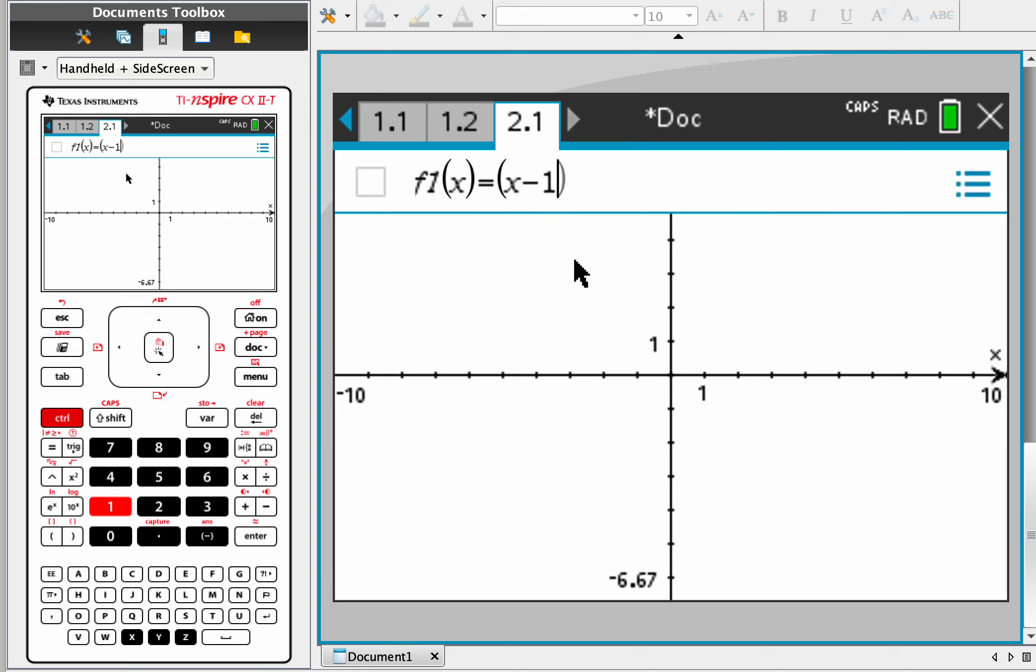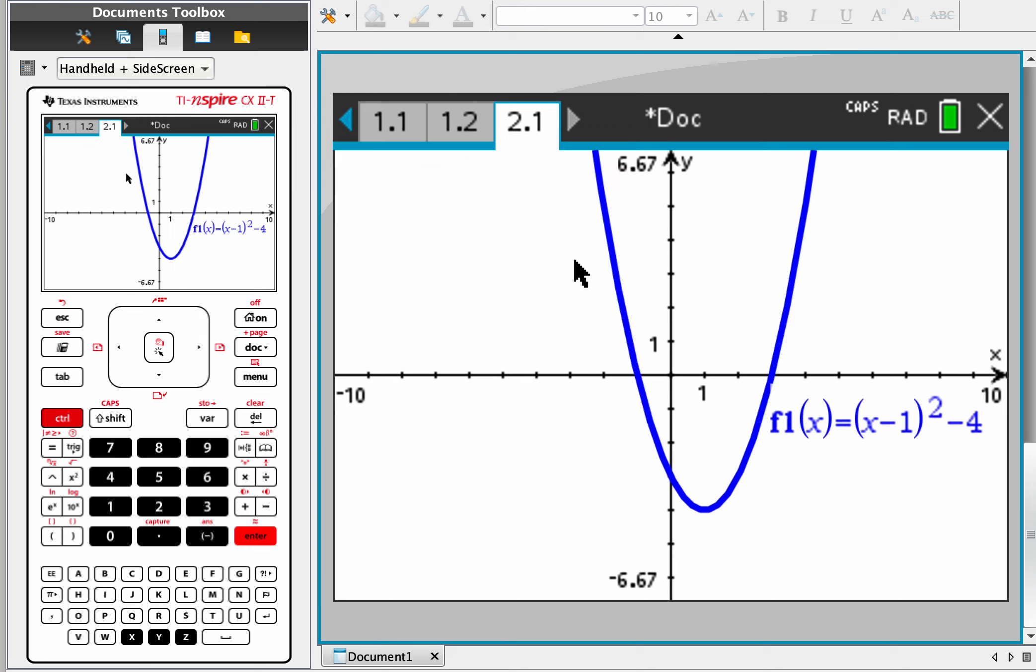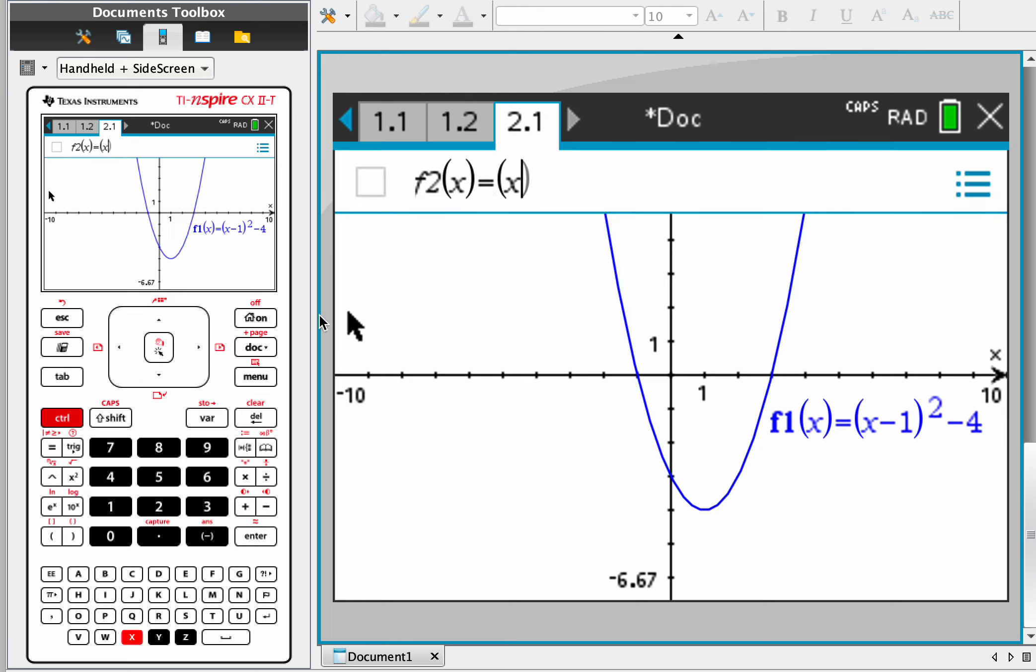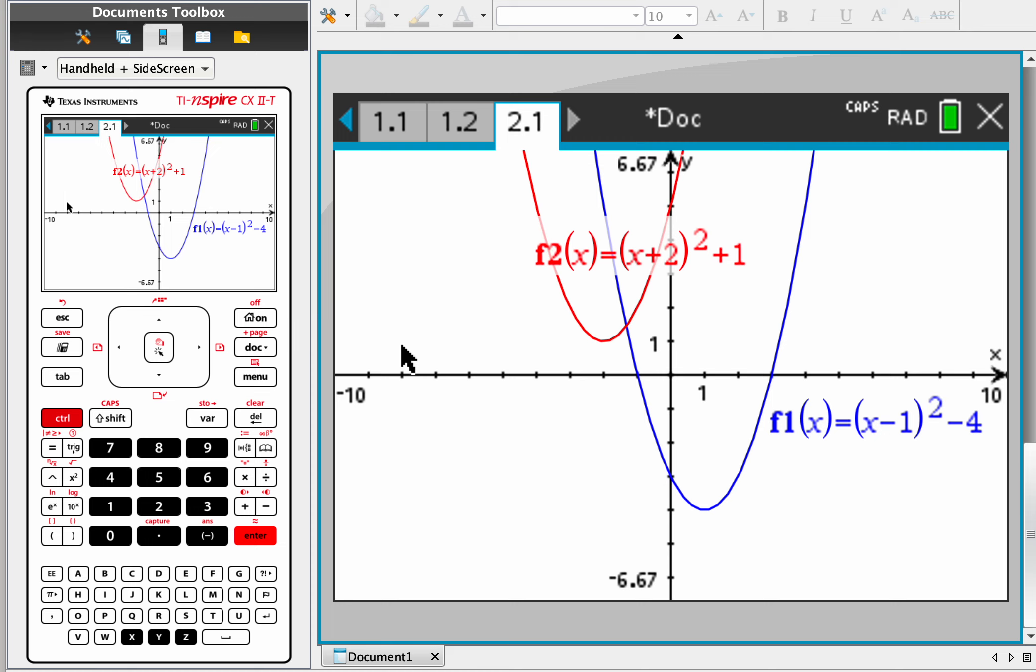So from here, you can do x minus 1 squared minus 4. So that's the first one. And the next one, just hit tab, and this is going to be x plus 2 squared plus 1.